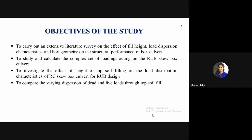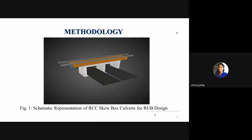The objectives are: first, to carry out an extensive literature survey on the effect of fill height, load dispersion characteristics, and box geometry on the structural performance of box culverts; second, to study and calculate the complex set of loadings acting on RUB skew box culverts; and third, to investigate the effect of height of topsoil filling on the load distribution characteristics of RC skew box culverts for RUB design.